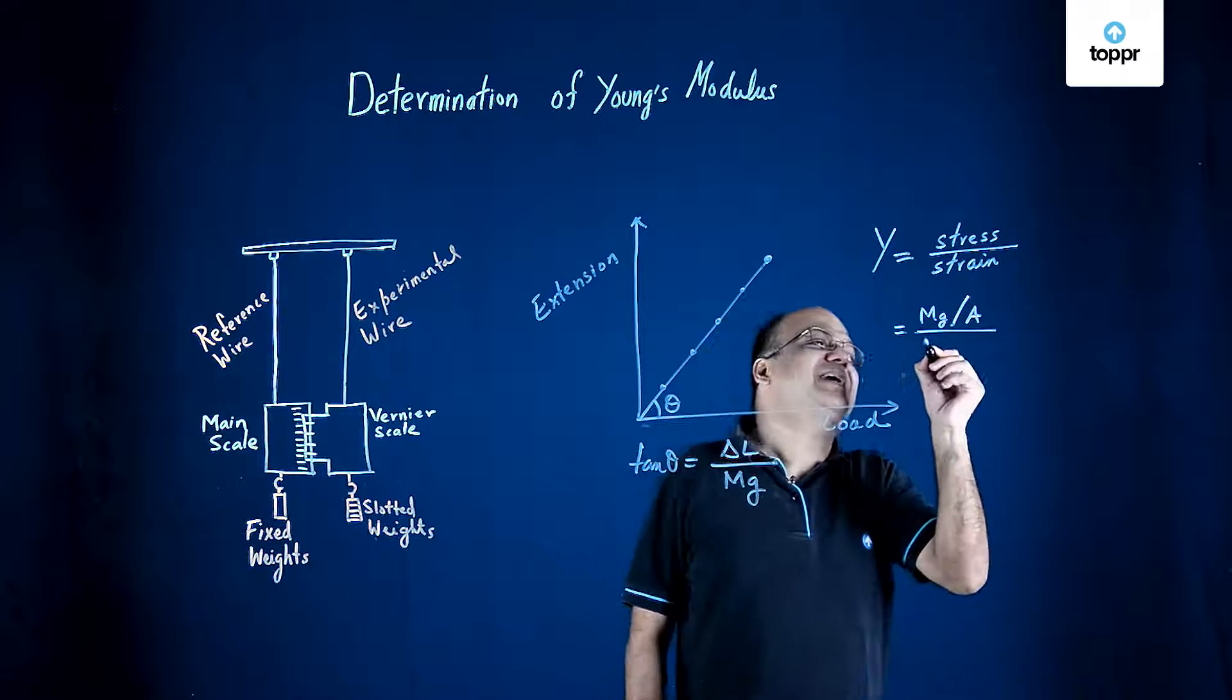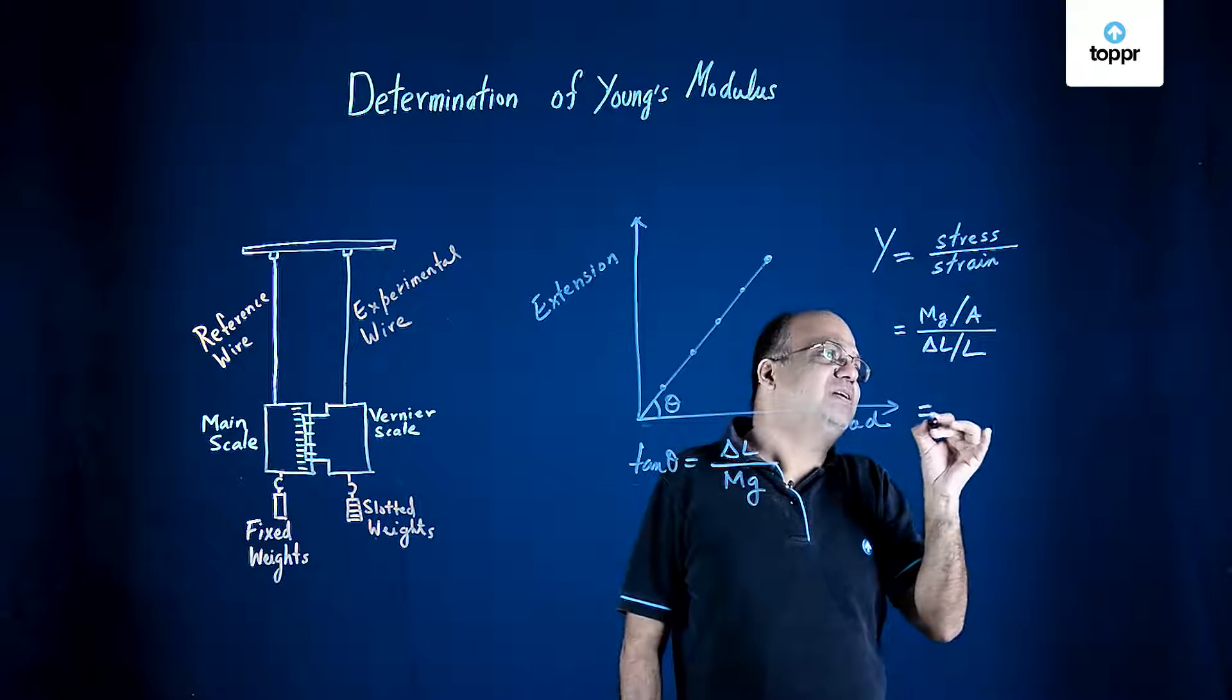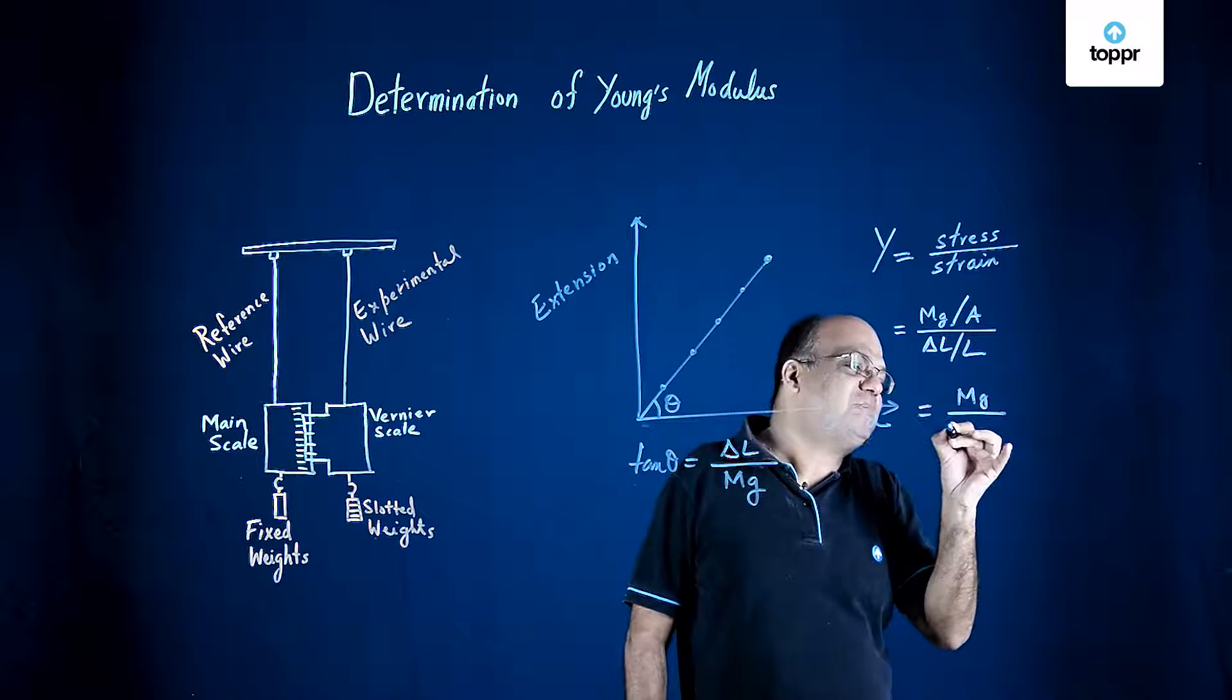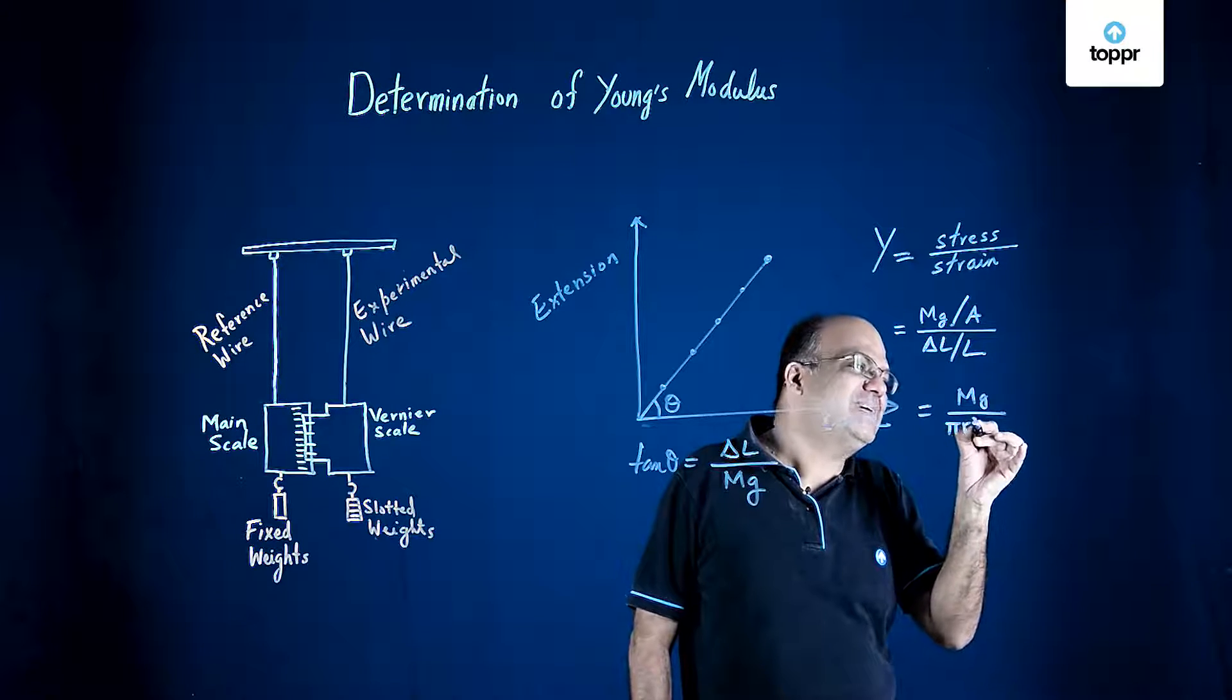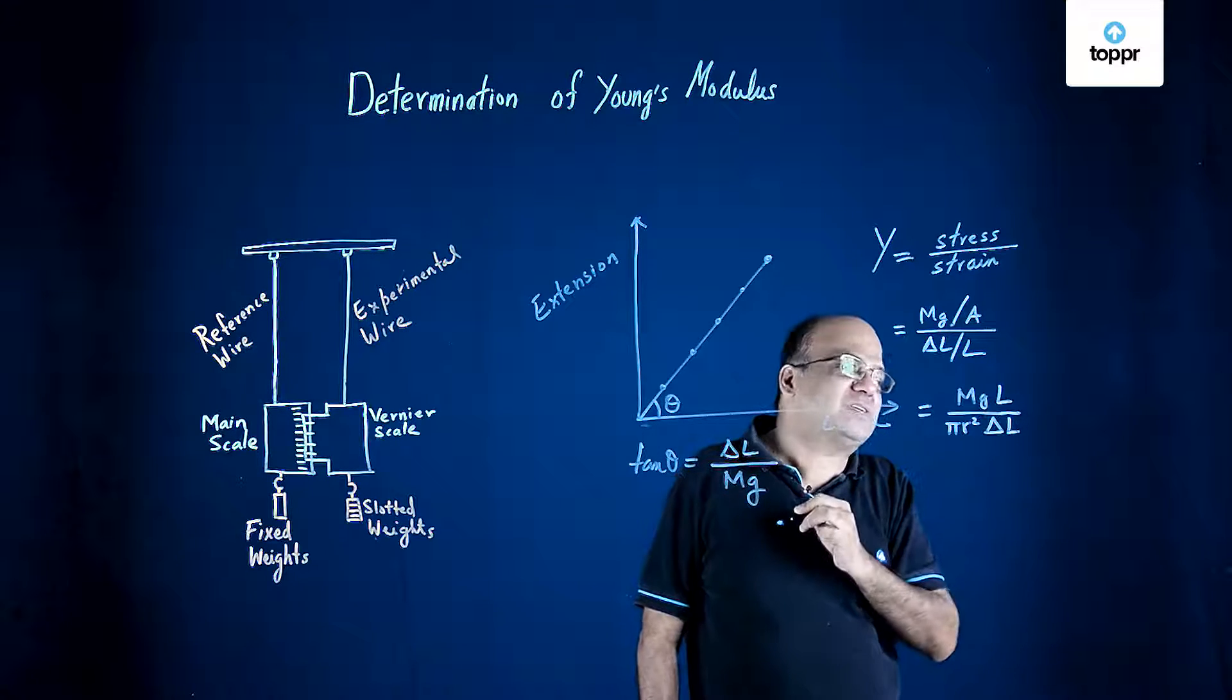Force is mg, that weight we are hanging, that mg is the force. Area is A. A will be pi r squared that we had measured. So pi r squared we know. Strain is delta L by L.